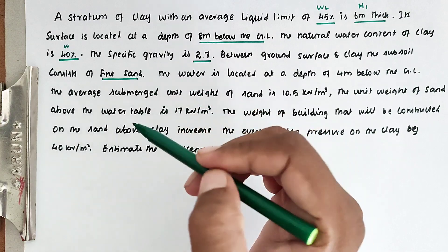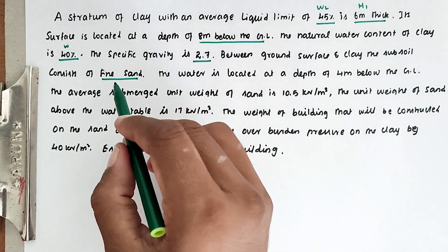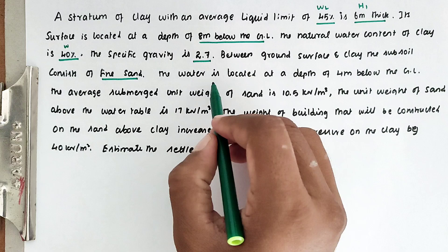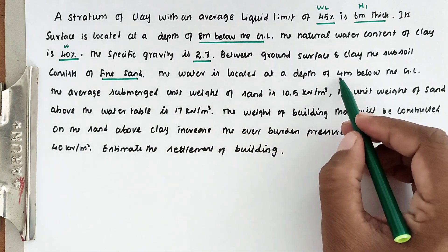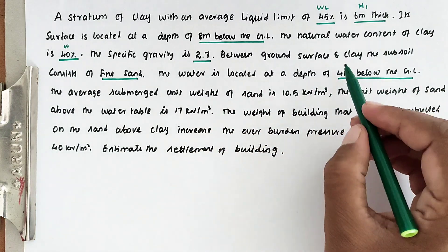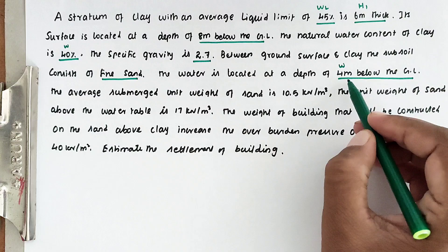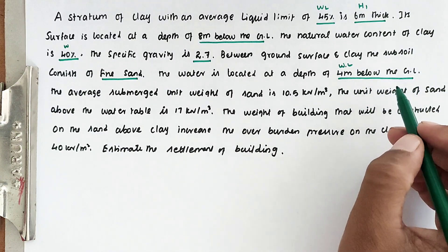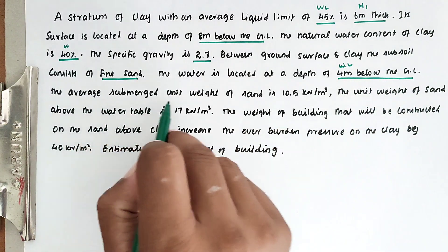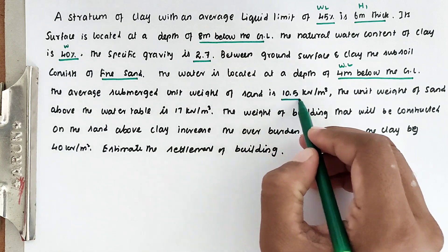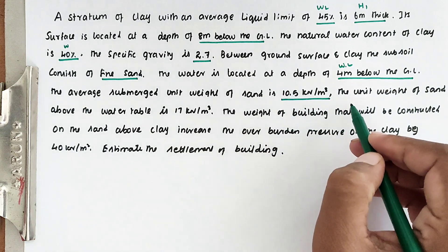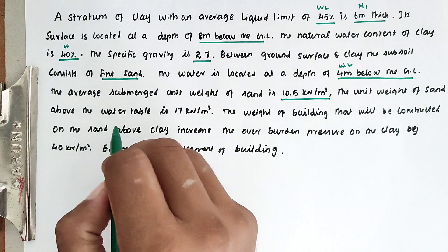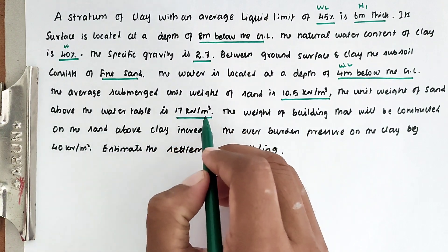The first layer is sand, then the second layer is clay. The fine sand layer is 8 meters thickness. Water table is located at 4 meters below the ground surface. The average submerged unit weight of sand is 10.5 kN/m³. The unit weight of sand above the water table is 17 kN/m².